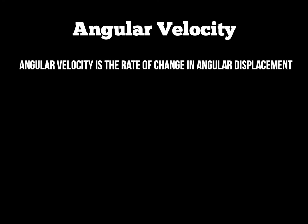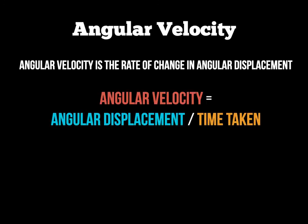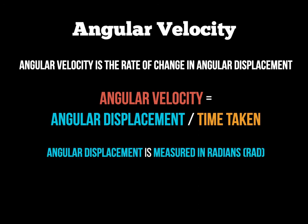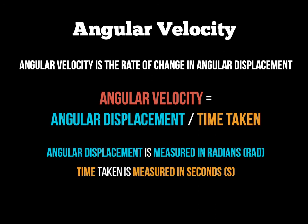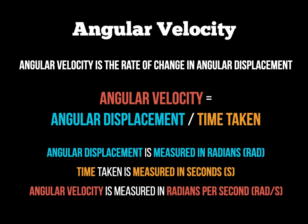Finally in this screencast we come to angular velocity, which is similar to velocity in linear motion. Angular velocity is the rate of change of angular displacement. The calculation is: angular velocity equals angular displacement divided by time taken, where angular displacement is measured in radians and time is measured in seconds. Angular velocity is therefore measured in rads per second, or radians per second.